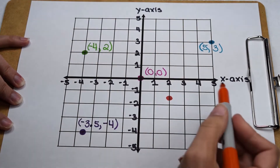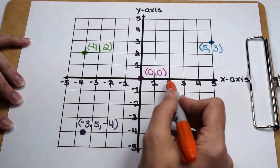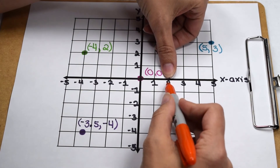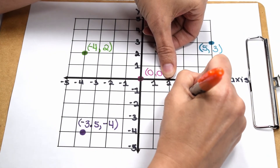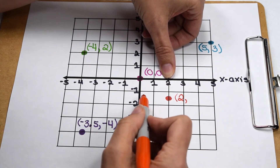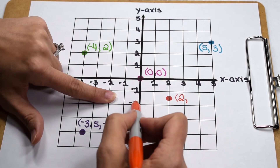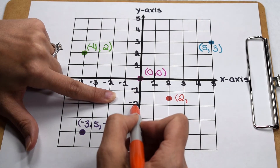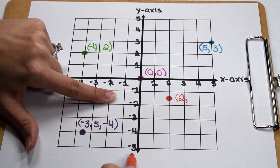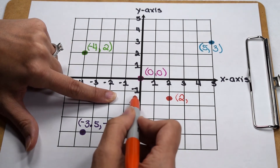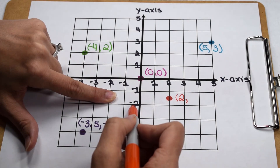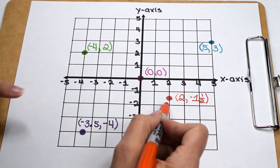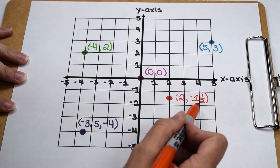We can finish by identifying our point in quadrant four. Checking its x value, we notice it's to the right of the origin so our x value is going to be positive. Our point lines up with 2, so positive 2 is our x-coordinate. Checking its y-coordinate, we notice we're below the origin so the y value is going to be negative. Our point falls about halfway between negative 1 and negative 2, so we can estimate the y value to be about negative 1.5. The ordered pair that would best represent this point is (positive 2, negative 1.5).